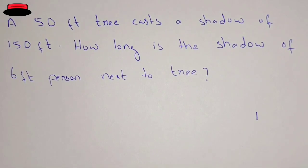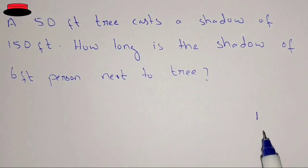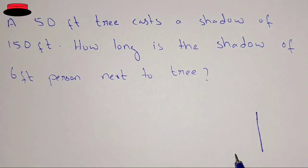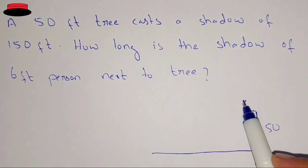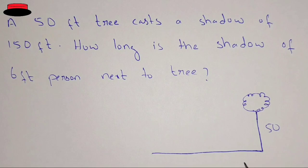Hello, what's up guys, welcome to the new video. In this video we have the problem: a 50 feet tree casts a shadow of 150 feet. We are drawing the figure for the tree — this is the height of the tree and this is the shadow of the tree. The height of the tree is 50 feet and the shadow of the tree is 150 feet.